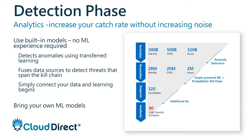In the example shown, there are 300 billion identity activities across Office 365, Azure, and other identity sources. These are analyzed to break down into certain anomalies, then the severities and correlations of those anomalies are assessed, ultimately resulting in a number of high severity incidents. In that example, they've got 90 high severity incidents, which will be flagged in your Sentinel portal for further investigation — drilling down into IP addresses, users, and devices that make up that incident.